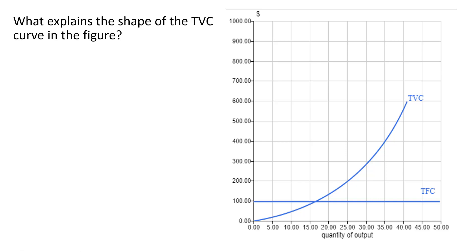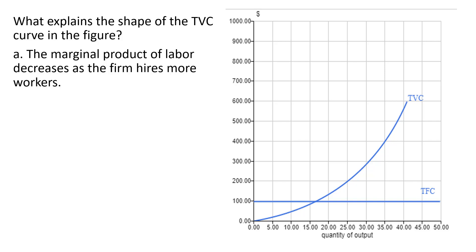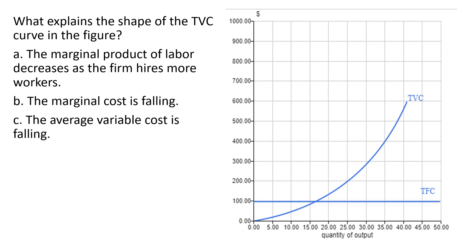What explains the shape of the total variable cost curve in this figure? The marginal product of labor decreases as a firm hires more workers — that is correct. Answer choice A.